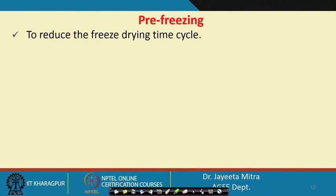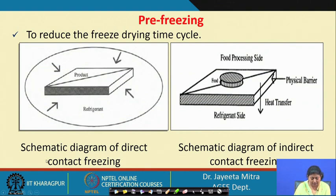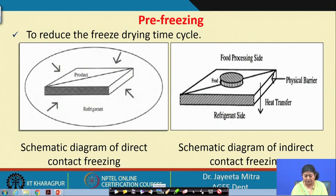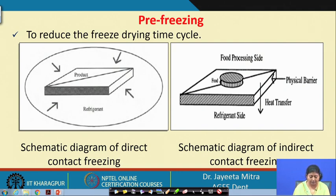Freeze drying related processes: the first is pre-freezing, to reduce the freeze drying time cycle. In direct contact freezing the product is directly exposed to the refrigerant, whereas in indirect contact freezing the food is kept on a material being cooled by refrigeration — so direct contact with the refrigerant does not take place and a physical barrier such as a plate causes the heat transfer by conduction. Pre-freezing can also be done by immersion freezing where the material is directly exposed to the refrigerant.